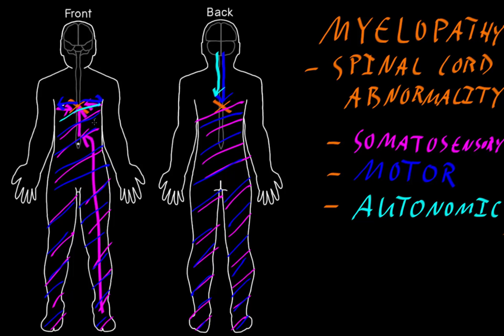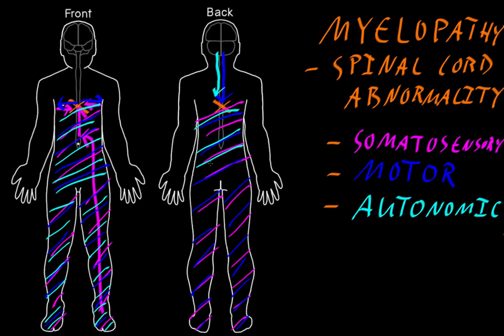In some ways this list is very similar to problems of the peripheral nervous system, where nerves carry information about somatosensory, lower motor neuron, and autonomic functions. But a difference here is that we're starting to get into upper motor neuron abnormalities — usually much more so than lower motor neuron abnormalities — because the upper motor neurons are in the central nervous system, including the spinal cord. Also, with myelopathy, the autonomic abnormalities of urination, defecation, and genital function are often seen, whereas that's a less common thing with problems of the peripheral nervous system, although it may happen there as well.